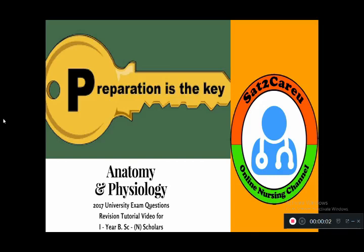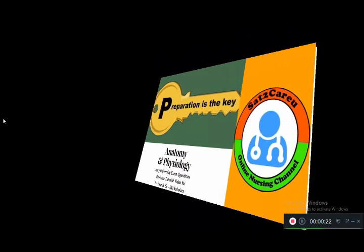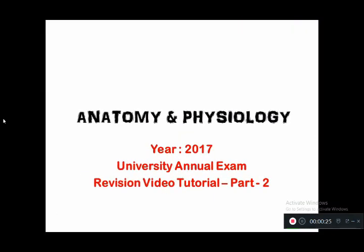Welcome to Sad2CareU Online Nursing Channel. This is the second part of the video discussing the 2017 Anatomy and Physiology University exam question paper. In our previous video we saw three questions applied to the heart, types of muscles, and cranial nerve. In this video we are going to see the second question, which is for 12 marks. In this 12 marks we have three sub-questions.